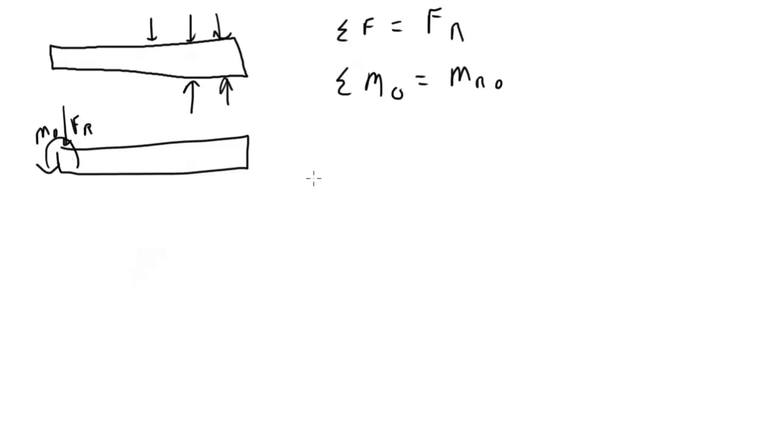So if we have this complicated loading system, we can figure out what the moments are of all of that. We'll sum all the forces together, we get some force resultant, and we'll sum all the moments at point O, and we'll get some resultant moment at O, and so we can rewrite it this way. Here's the moment at O, and here's the force, the resultant force.